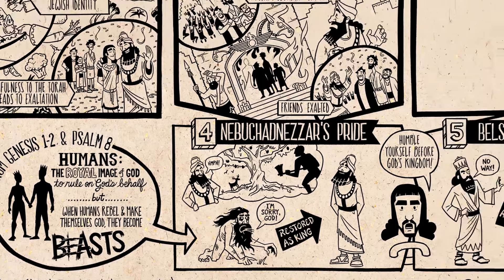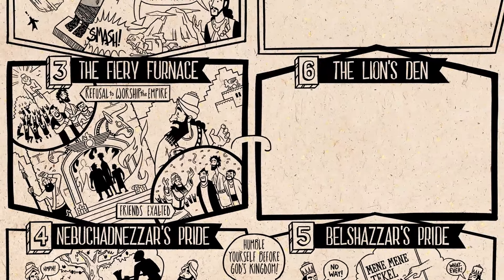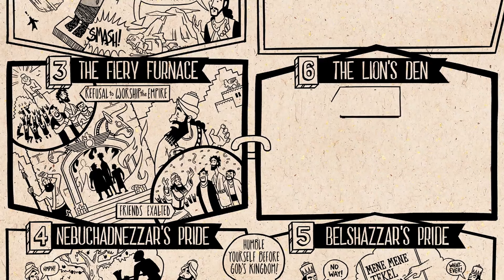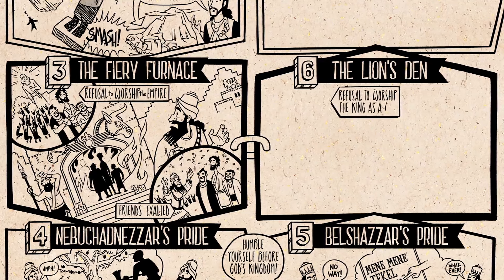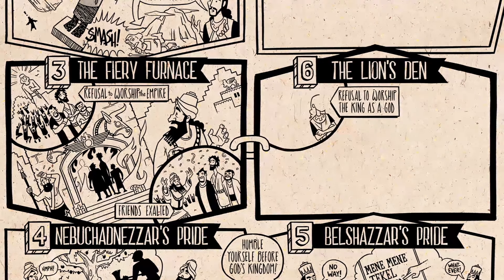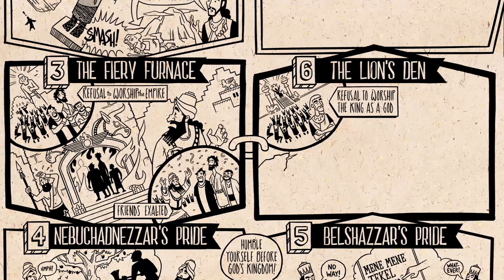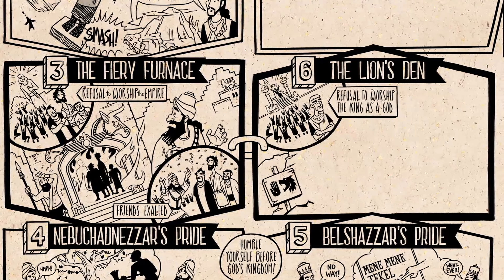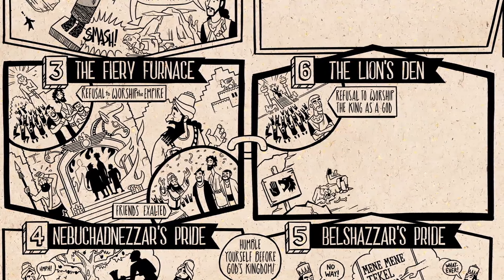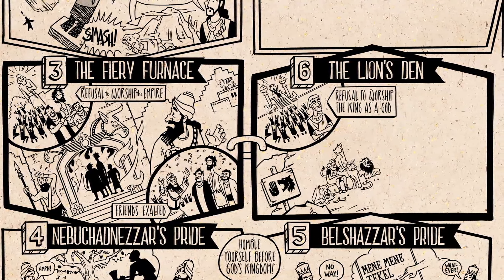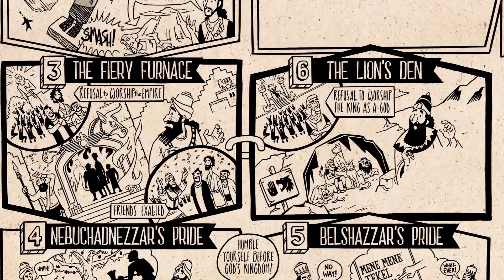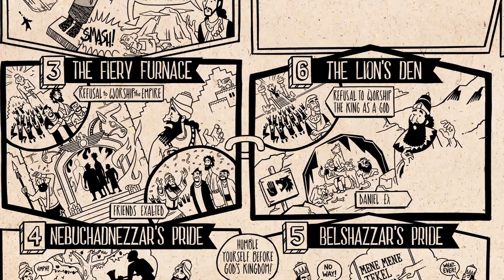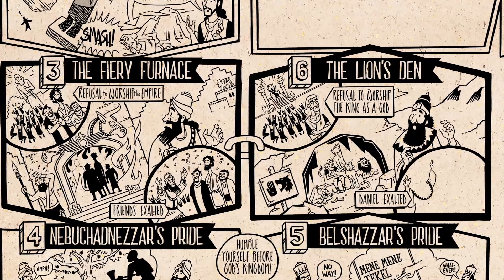Which brings us to chapter 6, the pair of chapter 3. This time it's Daniel who's being persecuted, because he refuses to pray and worship the king as a God. Like the friends, he's sentenced to death and thrown into a lion's den. But God delivers him from the beasts, and like the friends, the king exalts Daniel and praises his God.